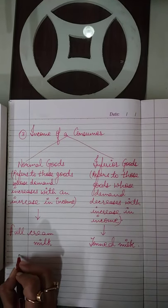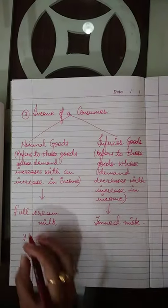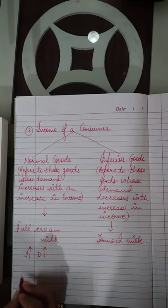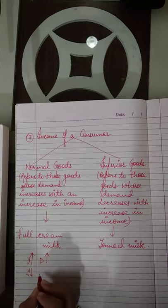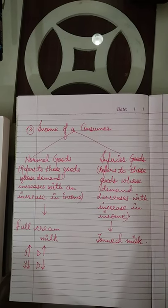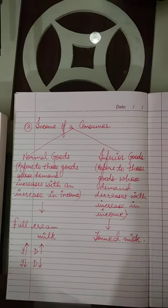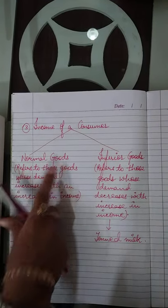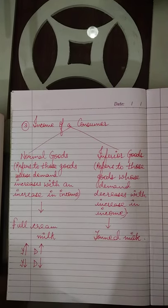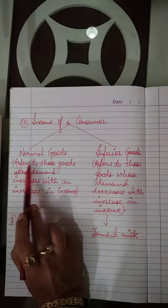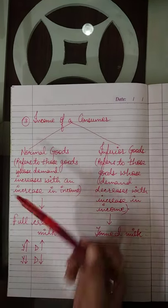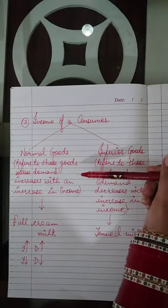Economics में income को Y से denote करते हैं। Income बढ़ी तो normal goods की demand बढ़ गई; income कम हुई तो normal goods की demand कम हो गई। So, normal goods refer to those goods whose demand increases with an increase in income — यह एक direct या positive relationship है।